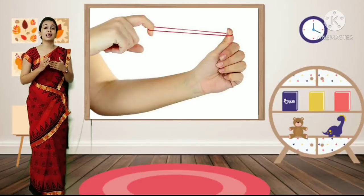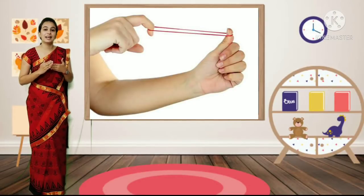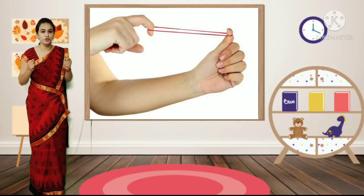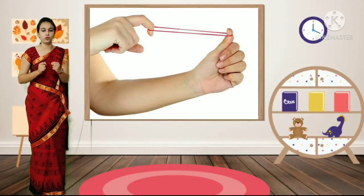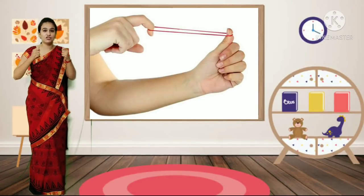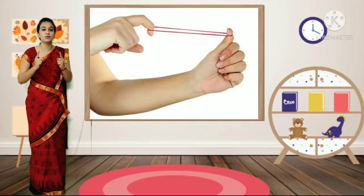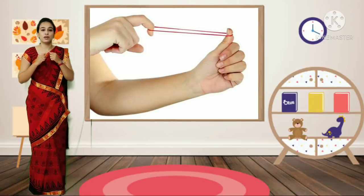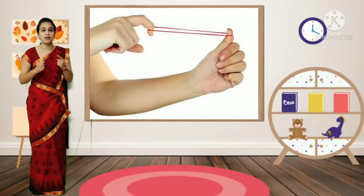The next force is elastic force. When we stretch any object, that is known as elastic force. For example, a rubber band - whenever we stretch the rubber band, it stretches. That is elastic force. When we stretch any object, that is known as elastic force.